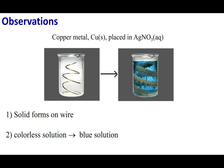What we're going to do is take observations on this experiment that we're going to run. Here's what I'm going to do. I'm going to take a solution of silver nitrate, and in that solution of silver nitrate, I'm going to place this copper metal wire.